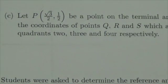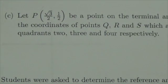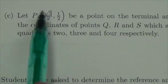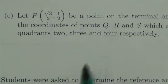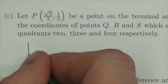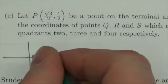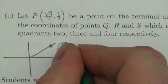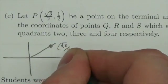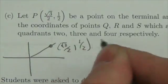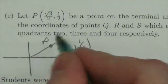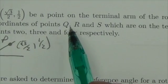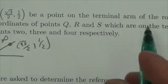Hi everybody, this is the Math 20-1 trigonometry review, question 5c. It's giving me a point in the first quadrant. We'll draw this out — the point is on the terminal arm of the first quadrant and the coordinates are root 3 over 2 comma 1 over 2. It's asking me to find the coordinates of points Q, R, and S in each of the other quadrants respectively.